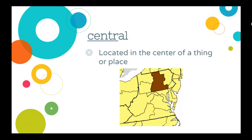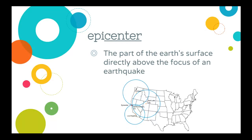Your next word is 'central,' which means that it is located in the center of a thing or place. On this map you can see the brown area — this is central Pennsylvania, where we live. It is located in the center of the state. Central Pennsylvania is located in the center, or the middle, of Pennsylvania.